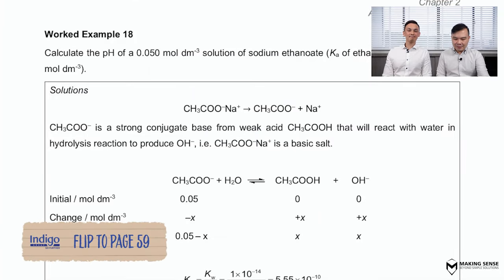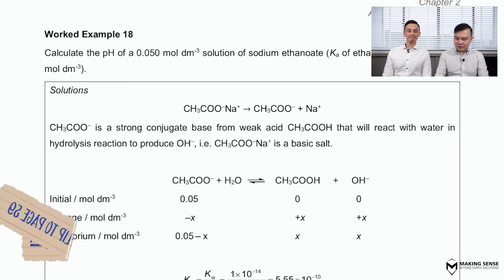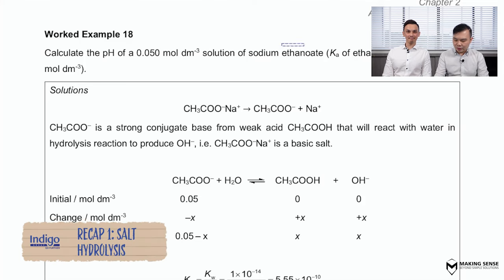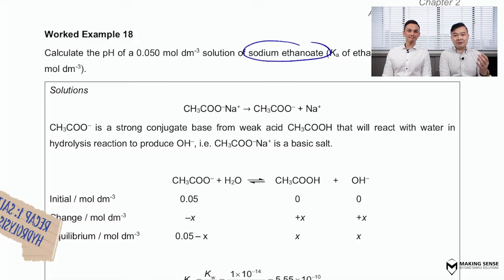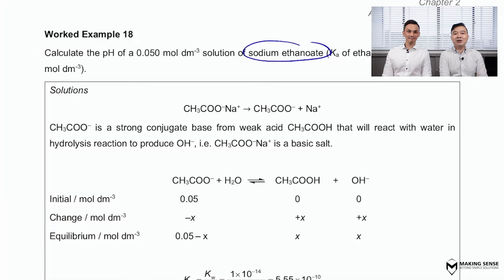The example here is using sodium acetate, and the first thing that you have to do is always understand if this salt is an acidic or basic salt. The idea is to always work backwards to look at the acid or the base that you used to neutralize to get the salt.